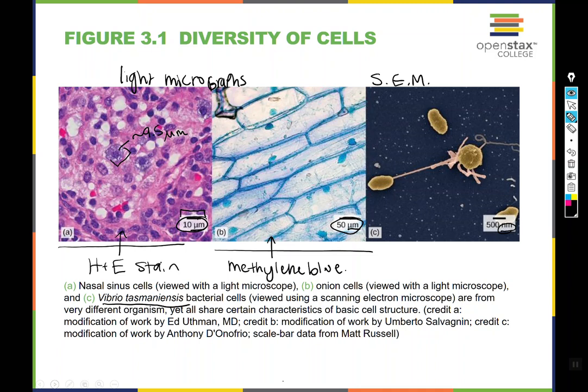These cells are not actually yellow on a blue background — they are falsely colored so that you can make out the distinction between the Vibrio cells and the background. All SEM photomicrographs are by definition black and white, but scientists will often color them in so you can make out the distinction between structures.